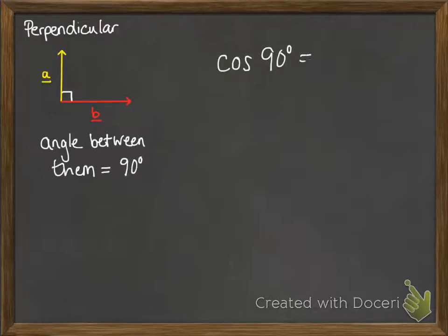If we do cos of 90 degrees, that gives us 0, so the scalar product this time will be equal to 0 because you're doing the magnitudes multiplied together but then times 0.